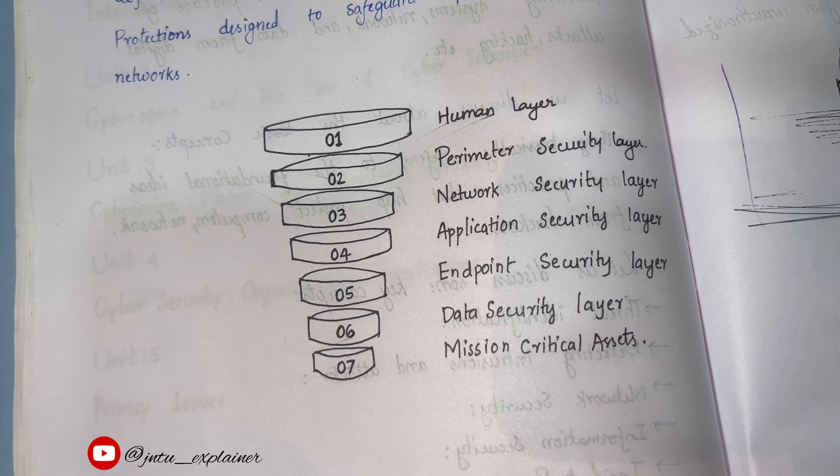It is a layer where the human has to do something by, he can protect his data by keeping difficult passwords, by keeping double authentication factors.